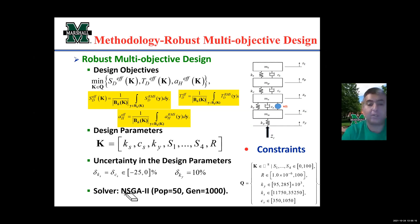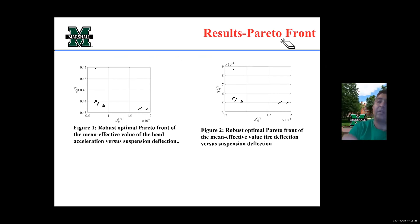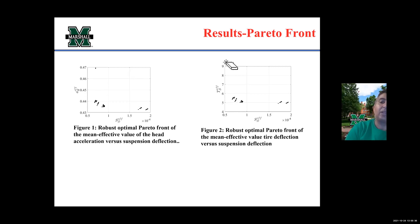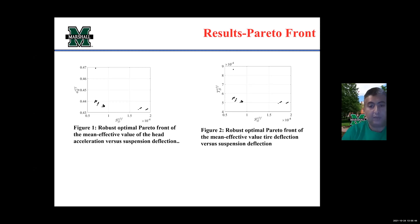The optimization problem is solved using the non-dominated sorting genetic algorithm with a population size of 50 and 1,000 generations. We obtain the Pareto front and Pareto set. The Pareto front is the function evaluation of the Pareto set, and you can notice a conflict between suspension deflection and head acceleration, as well as a conflict between the mean effective value of suspension deflection and that of tire deflection.